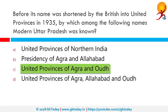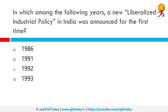It corresponds to approximately the present-day Indian states of Uttar Pradesh and Uttarakhand. In which among the following years was a new liberalized industrial policy in India announced for the first time? The correct answer is 1991. The economic liberalization in India refers to changes and reforms initiated in 1991 of the country's economic policies with the goal of making the economy more market and service-oriented and expanding the role of private and foreign investment.